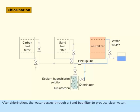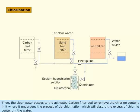After chlorination, the water passes through a sand bed filter to produce clear water. Then the clear water passes to the activated carbon filter bed to remove the chlorine content in it, where it undergoes the process of dechlorination, which absorbs the excess chlorine content in the water.